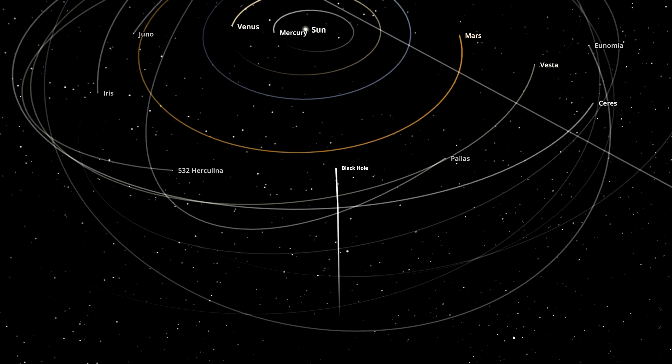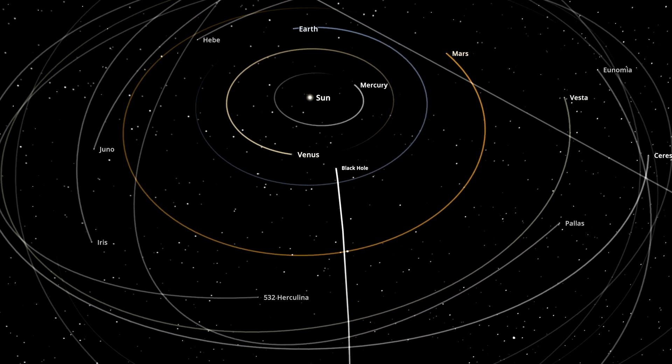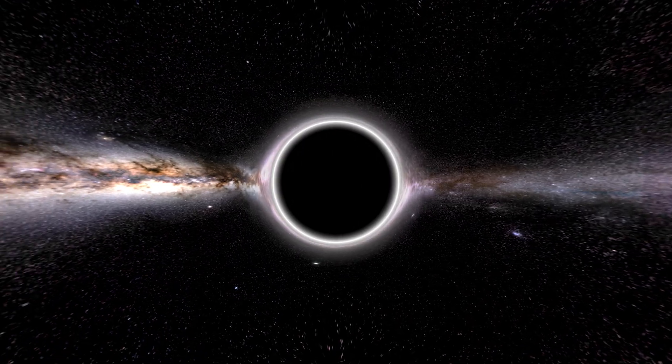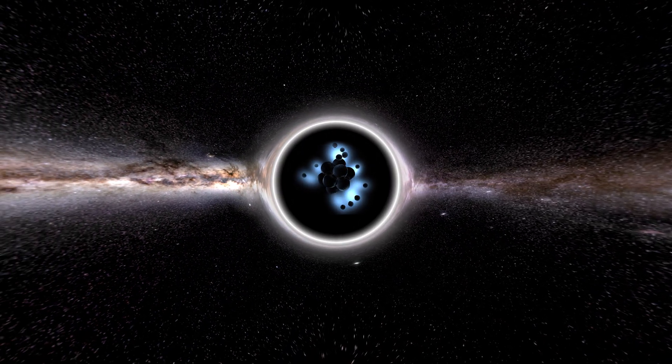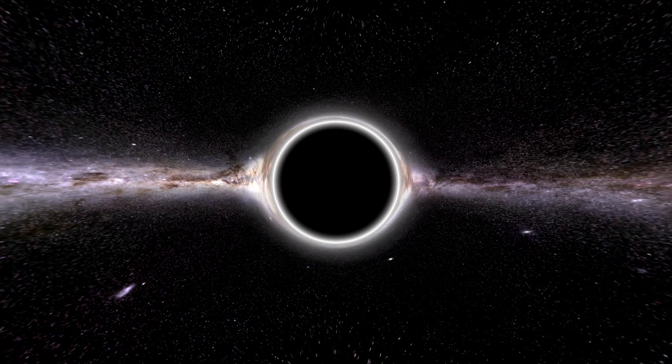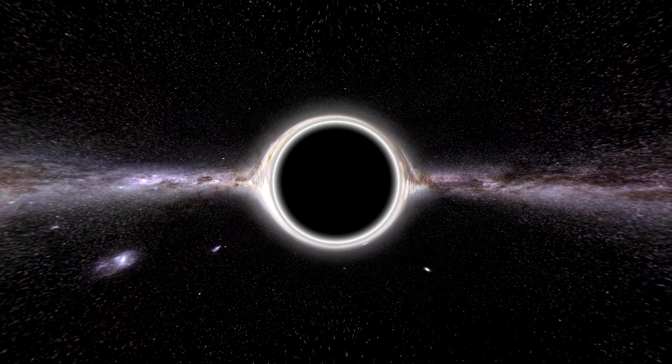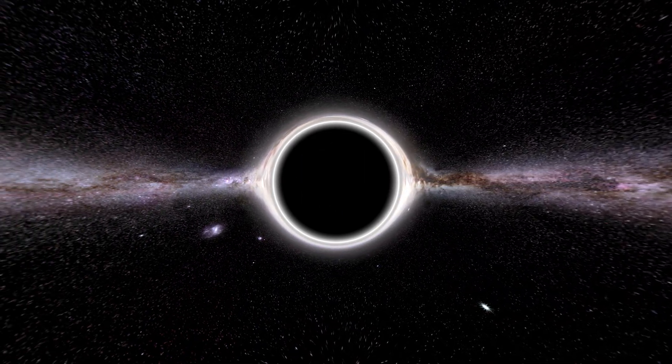A new study says a black hole might be passing through our solar system, but not the massive ones that swallow stars. This one is tiny, about the size of an atom, but with the mass of an asteroid. It may happen almost every decade, and we barely notice it.